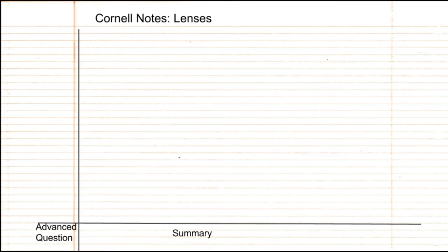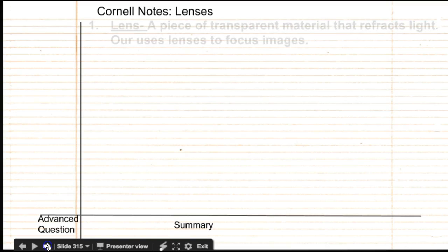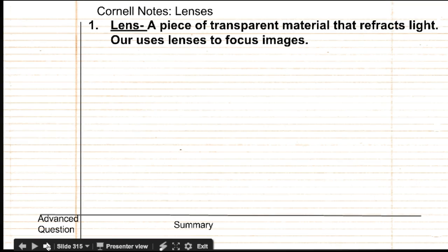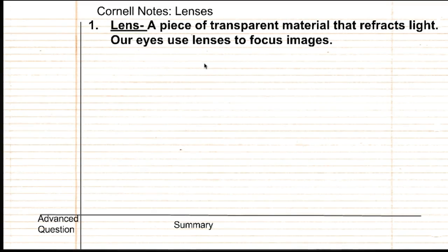Ready? Let's begin. Alright, for number one, write lens. A lens is a piece of transparent material that refracts light. Remember last time we talked about the word refracting means bending of light because it changes speed. Our eyes use lenses to focus images, so we even have a pair of lenses in our eyes right now.